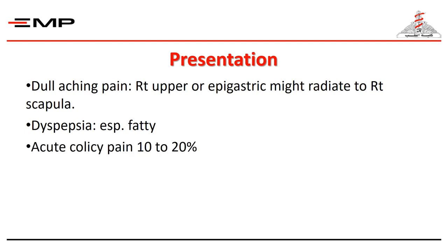Severe colicky pain at right upper quadrant may be associated with nausea and vomiting. Pain may radiate to the chest and in this case angina should be ruled out. Colic may last four minutes or even several hours and the patient may refer to the ER for systemic antispasmodics. Repeated attacks, especially if becoming frequent, should hasten cholecystectomy to avoid pending complications.